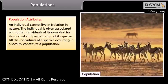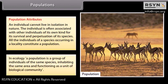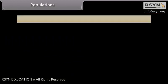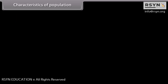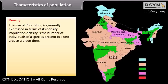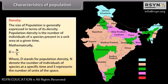An individual cannot live in isolation in nature; it is associated with other individuals of its own kind for survival and perpetuation of its species. All the individuals of a species occurring in a locality constitute a population — a group of individuals of the same species inhabiting the same area and functioning as a unit of biological community. Population density is the number of individuals of a species in a unit area at a given time, expressed as D = N/S. Birth rate is the ratio of live births per 1,000 population per year. Death rate is the ratio of deaths per 1,000 per year. Sex ratio is the proportion of males to females, expressed as males per 100 females.